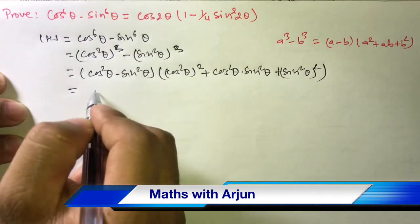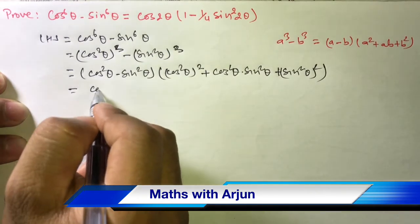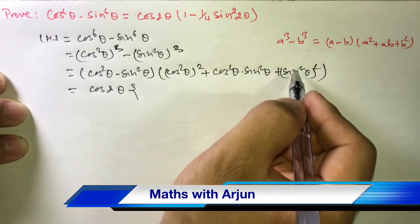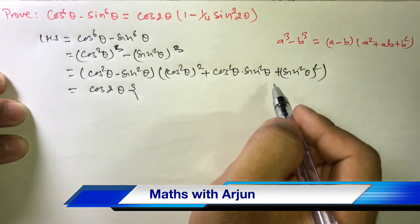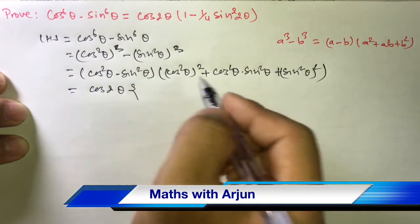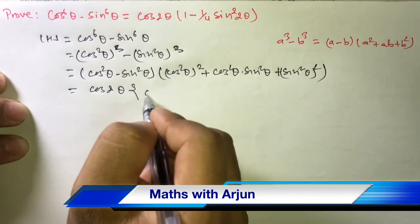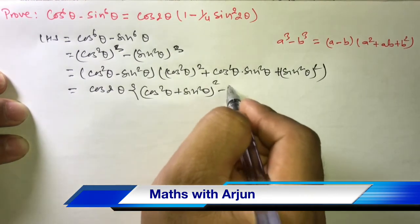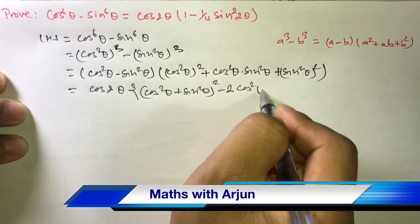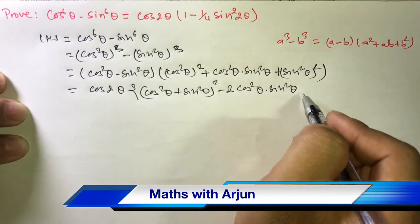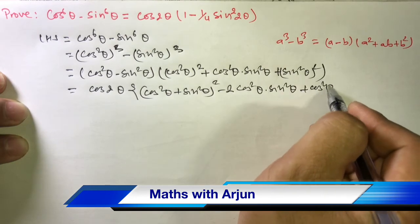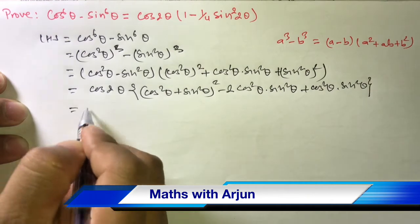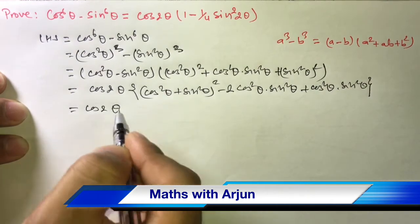Now cos²θ minus sin²θ is the formula of cos 2A, so here it becomes cos 2θ. The remaining term cos⁴θ plus sin⁴θ is in the form of a² plus b², so we use the formula a² plus b² equals (a+b)² minus 2ab. That gives (cos²θ + sin²θ)² minus 2cos²θ sin²θ plus cos²θ sin²θ, and cos 2θ remains as it is.